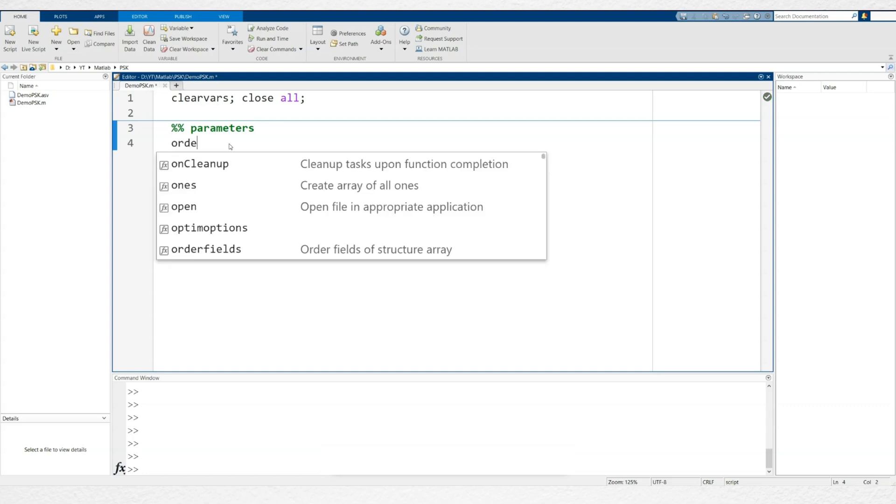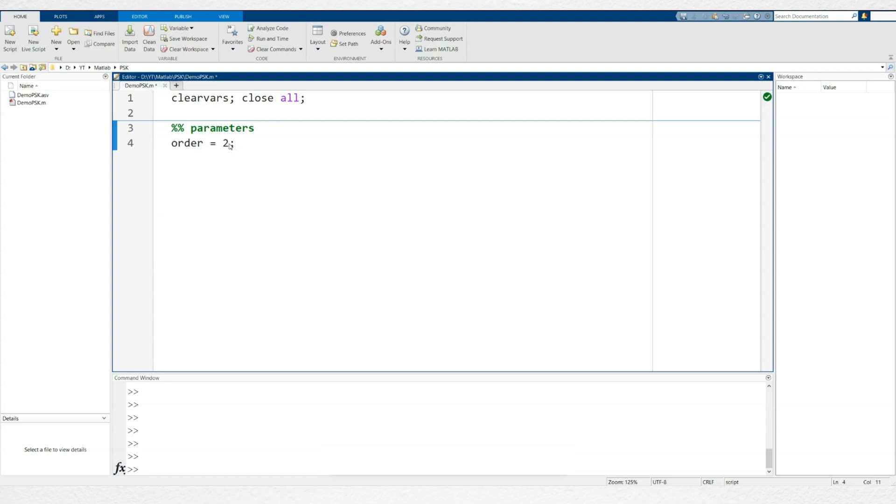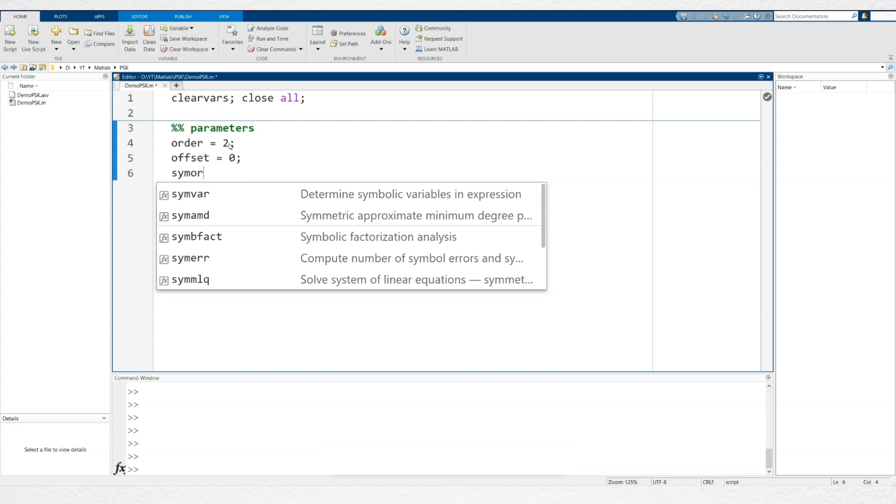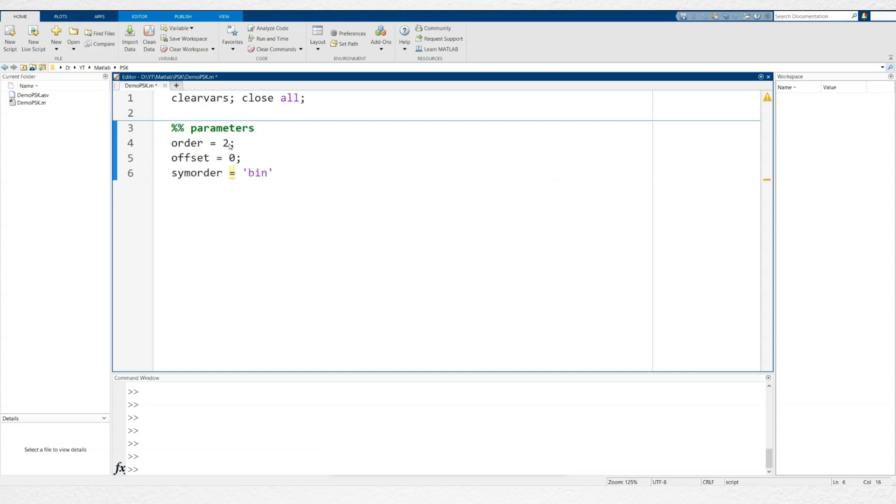The first section will set the parameters. We'll define the PSK modulation order, which determines the type of PSK to be used, and set it to 2 for BPSK. After that, we'll specify the constellation offset and initialize it to 0 radians for now. Next, we have the symbol order, or mapping, which can be set to either binary or gray. This determines how phase states correspond to specific bits.